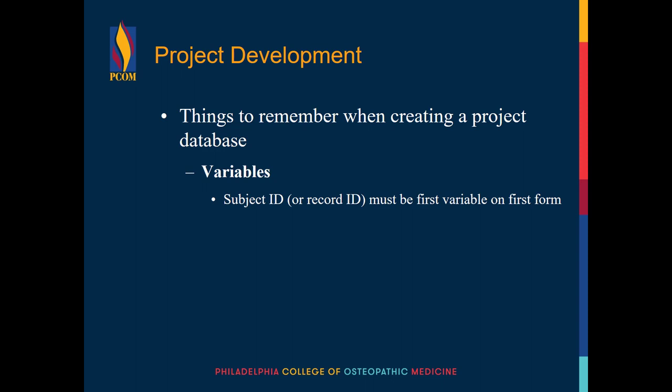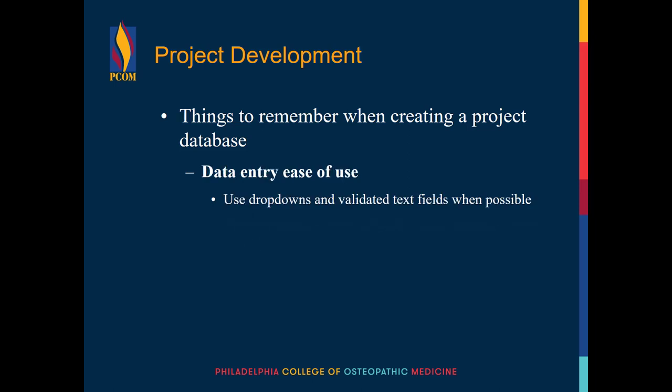There are a few valuable tips to remember when creating your project database. First, in each project, the subject or record ID must be the first variable on the first form. This ID is unique to each record. Second, variable names can only contain lowercase letters, numbers, and underscores — you can't use spaces in these fields. Third, to make data entry as easy and clean as possible, use dropdown menus and validated text fields. This will save time and headache because you won't need to look up a value or spelling.